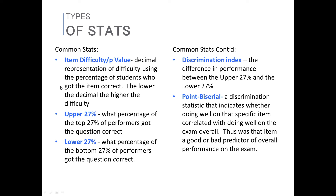The point biserial takes discrimination a little bit further. It incorporates more than just that particular question — it's a way of looking at whether doing well on this question represented doing well overall on the assessment. Is this item a good predictor of overall performance on the exam? Is this question representative of knowing the content overall? The simplest way to put it: does doing well on this question mean doing well overall? It measures discrimination but includes all of your students rather than just the upper and lower 27%.